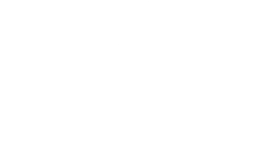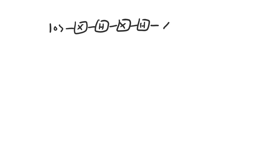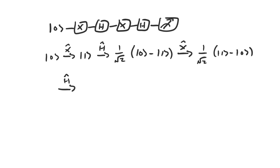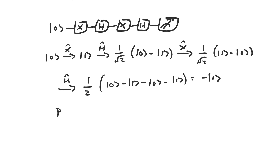What happens if we first apply a NOT gate and then run the same circuit? Are we guaranteed to find the qubit in the state |1⟩? The first NOT gate sends the qubit into |1⟩. Then the first Hadamard gate puts it into 1/√2 (|0⟩ − |1⟩). Applying the second NOT gate reverses |0⟩ and |1⟩, and then the last Hadamard gate transforms accordingly. The result is that the qubit will be in the state −|1⟩. The square of this amplitude is 1, since (−1)² = 1, so we're guaranteed to find the qubit in state |1⟩.